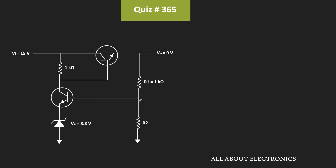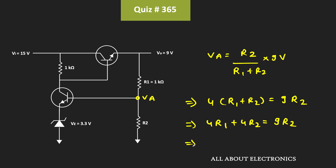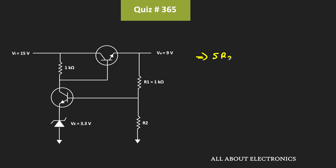Applying the voltage divider rule, we can say that Va is equal to R2 divided by (R1 plus R2) times 9V. Here Va is equal to 4V while R1 is equal to 1K Ohm. That means 4 times (R1 plus R2) equals 9 times R2, so 4R1 equals 5 times R2. Since R1 equals 1K Ohm, 5 times R2 equals 4K Ohm, so R2 equals 4K Ohm divided by 5.